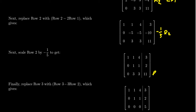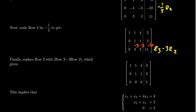Now I perform another replacement: take row 3 and subtract from it 3 times row 2. Since the first entry of row 2 is 0, that column won't change. Computing the remaining entries: 3 - 3 = 0, 3 - 3 = 0, and 11 - 6 = 5. So the third row becomes [0, 0, 0 | 5]. Notice the staircase pattern of zeros forming in the matrix.